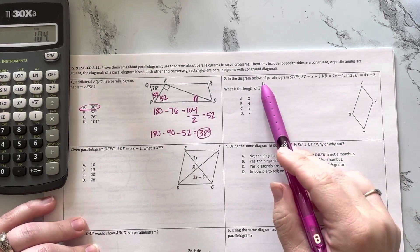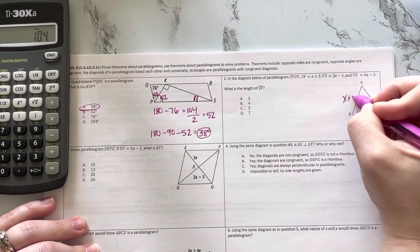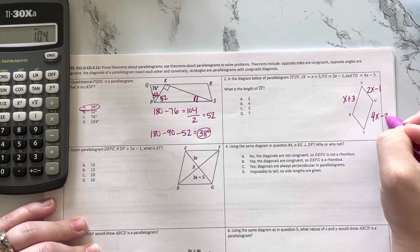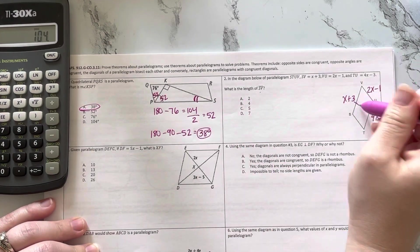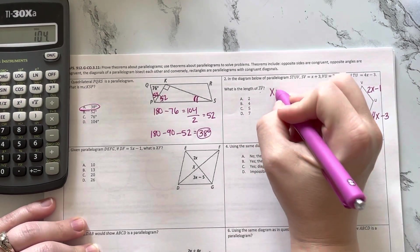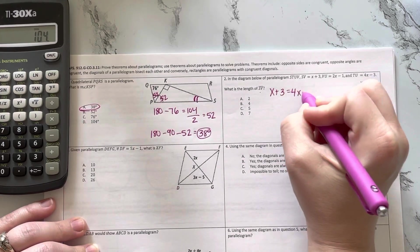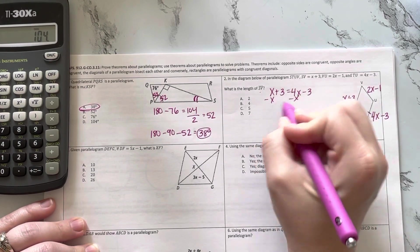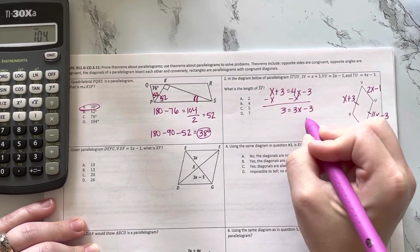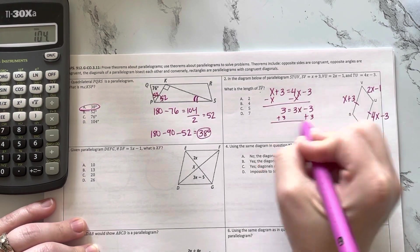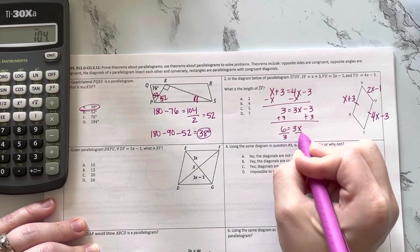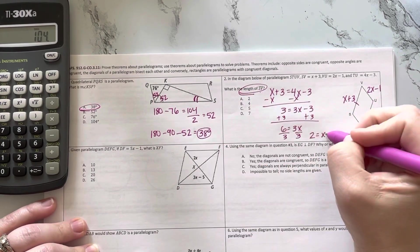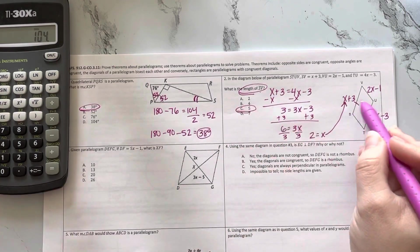In the diagram, I have a parallelogram. I'm told SV is X plus 3, VU is 2X minus 1, and TU is 4X minus 3. What is SV? Well, opposite sides in the parallelogram are congruent. We are going to set them equal, so this doesn't need to be used at all. So 4X minus 3 equals X plus 3. Subtract X, add 3, divide by 3. 2 equals X. I'm not done, they want the length of SV. Plug this in and you will get 5. 2 plus 3 is 5.